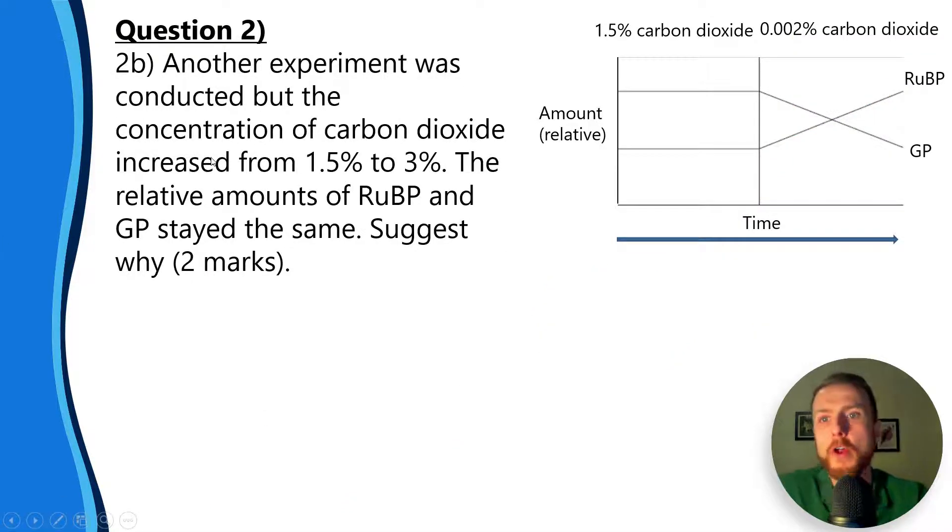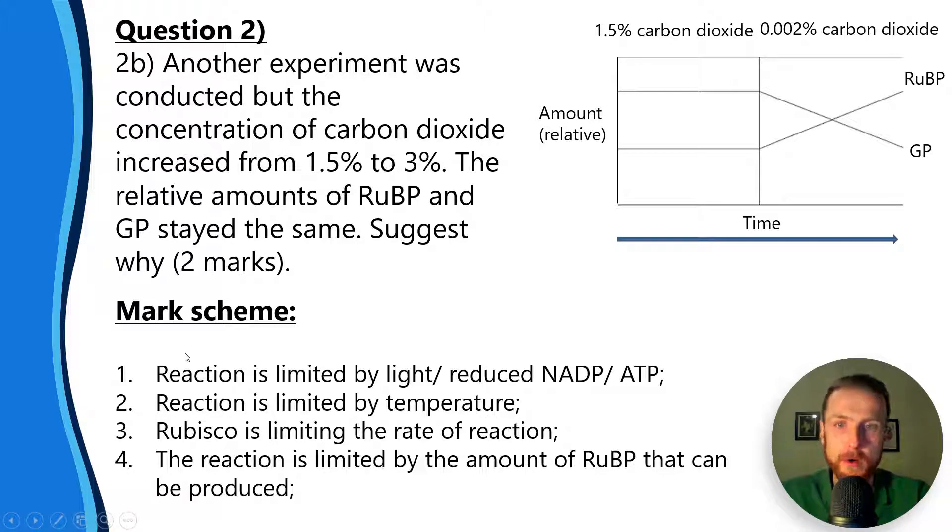Next up, another experiment was conducted but the concentration of carbon dioxide increased from 1.5% to 3%. The relative amounts of RuBP and GP stayed the same. Suggest why. Your first mark would be because the reaction is limited by light, reduced NADP, or ATP.